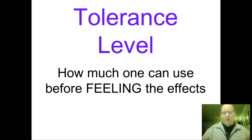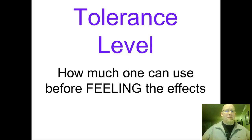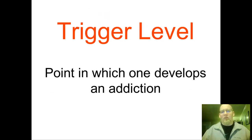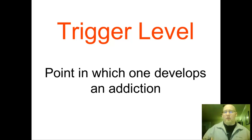The next term is tolerance level — how much a person can use before they feel the effects of a particular substance. A lot of times people think tolerance is a good thing, but sometimes it's not, because a high tolerance could encourage us to use more and more of a drug. We're basically desensitizing ourselves to the effect of a drug. Then we have trigger level — the point at which an addiction occurs. It's almost like you pull the trigger on a gun and now you've created the problem — the addiction has been created.